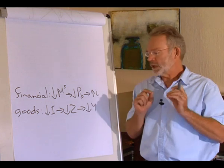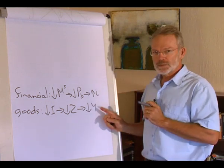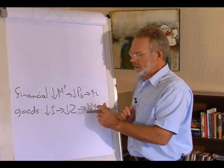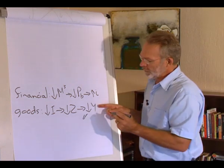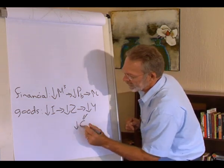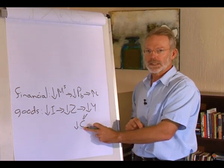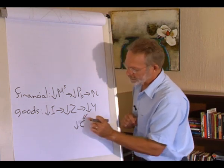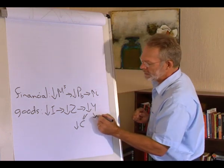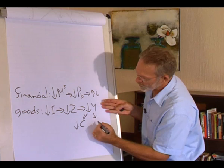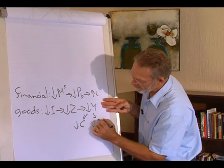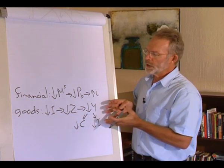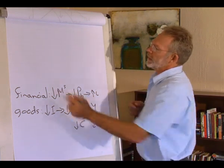Private consumption expenditure is a function of output, so the decrease in the level of output leads to a decrease in private consumption expenditure. Total output also affects investment: investors will invest less because production decreased, so investment will also decrease. We can show this graphically.